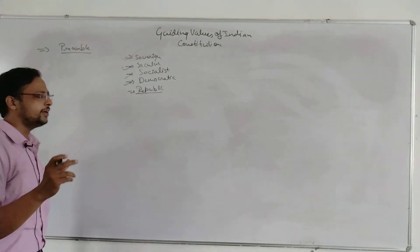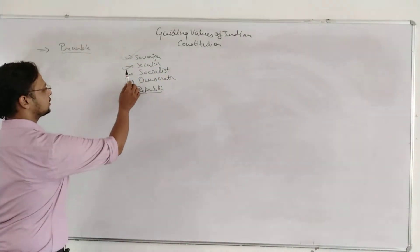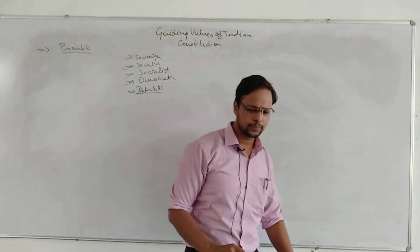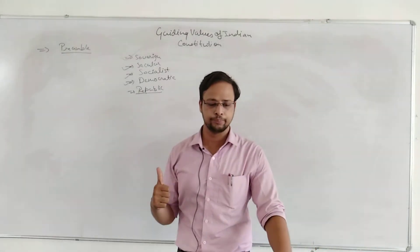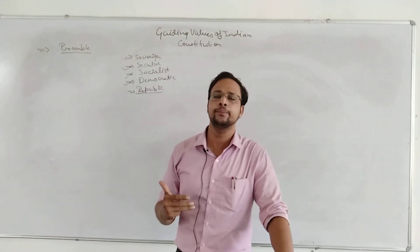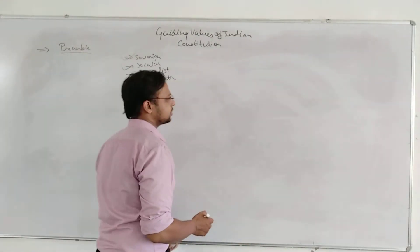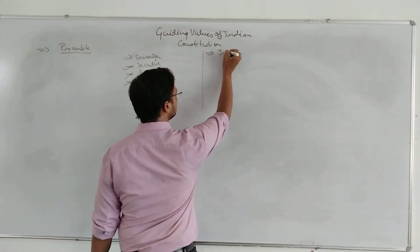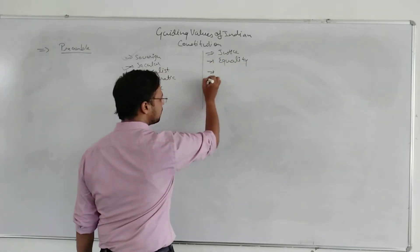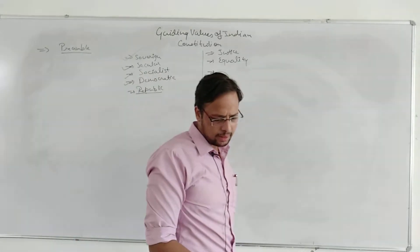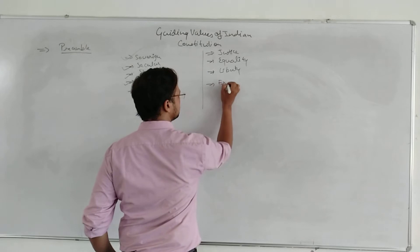After republic, the preamble also says that we the people of India resolve to secure to all citizens: justice, liberty, equality, and fraternity. These are the next set of terms we need to understand.